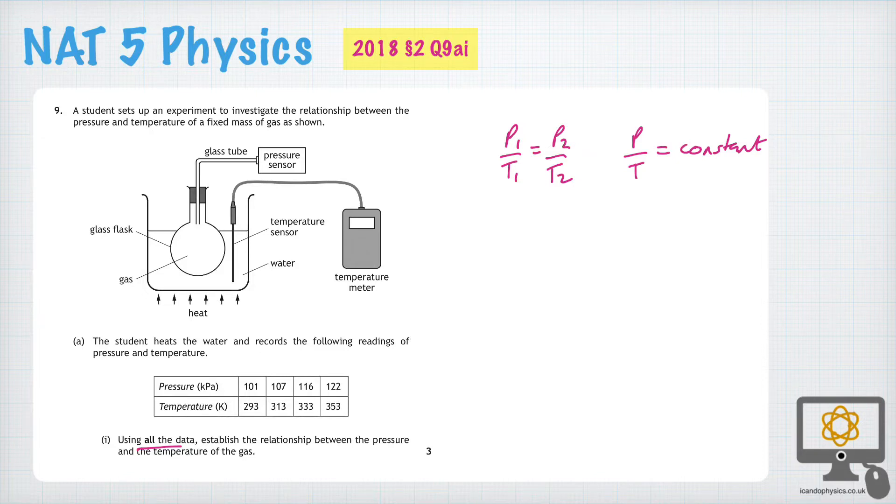Pressure over temperature: 101 over 293, do that calculation. 107 over 313, do that calculation. 116 over 333, do that calculation. And finally, 122 over 353, do those calculations.